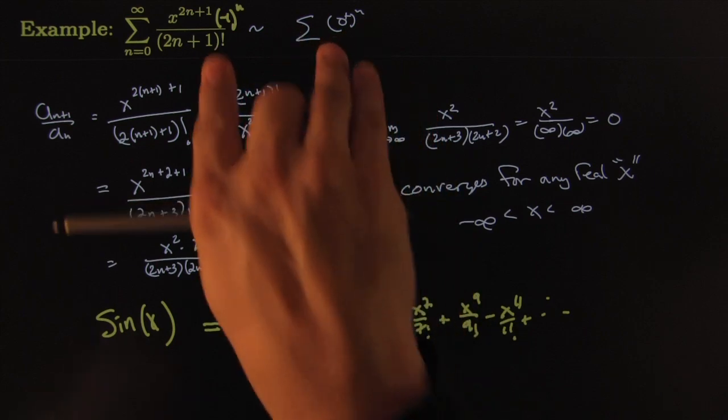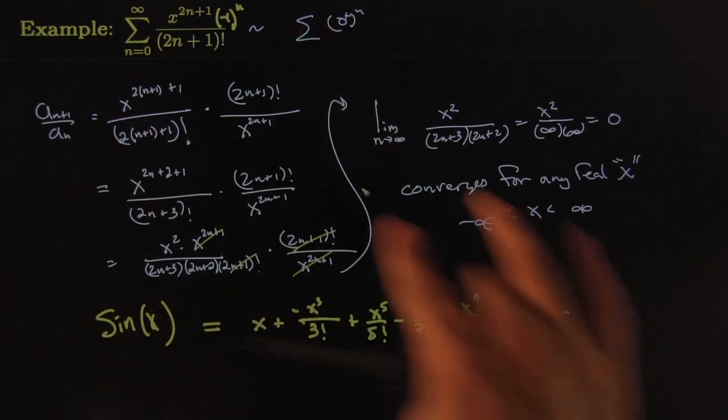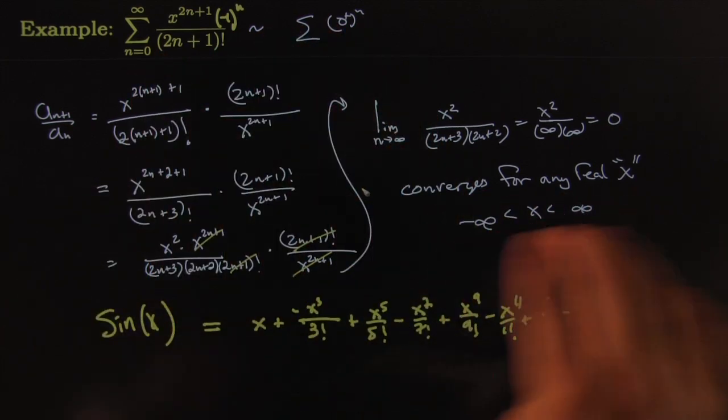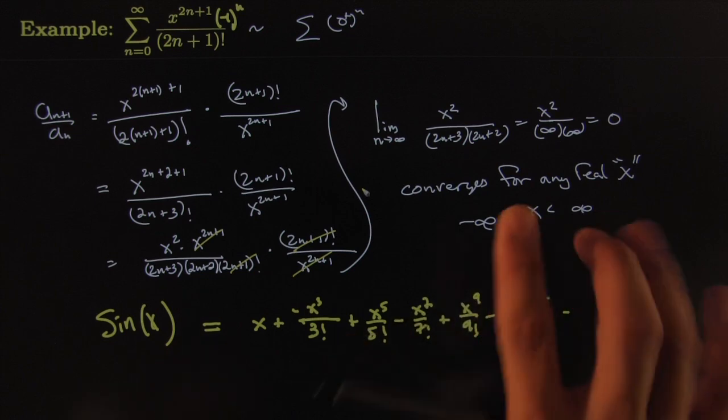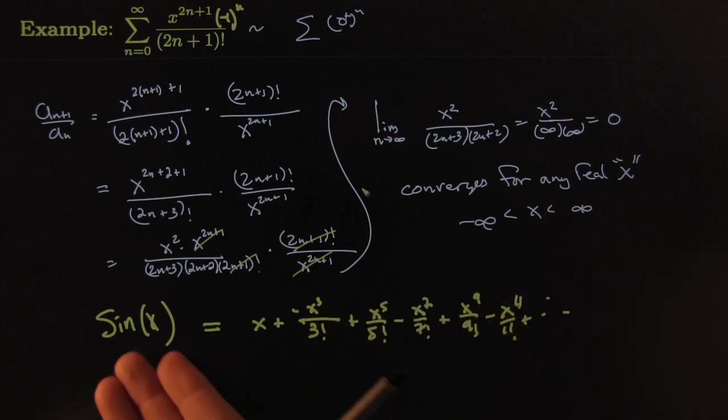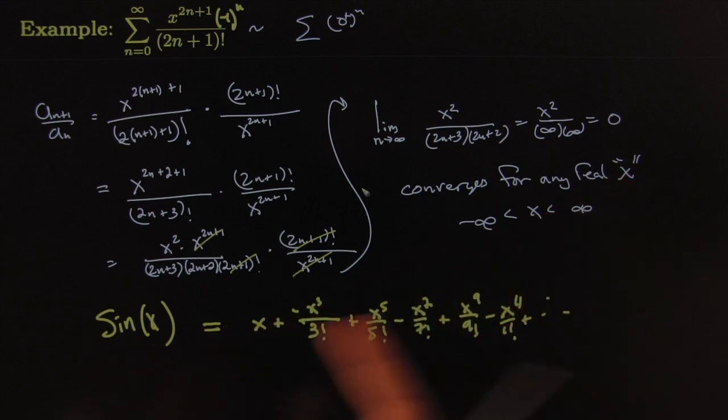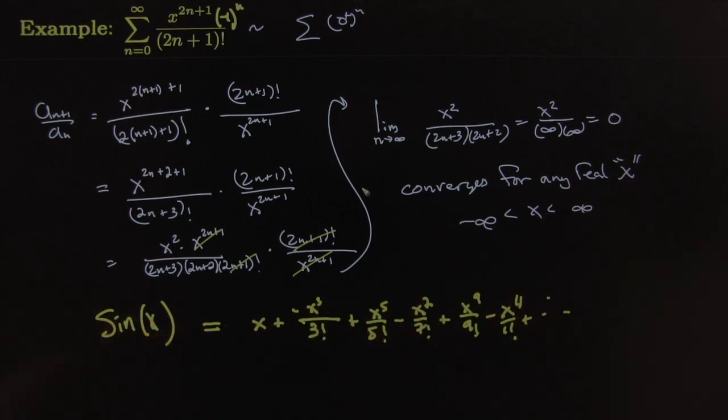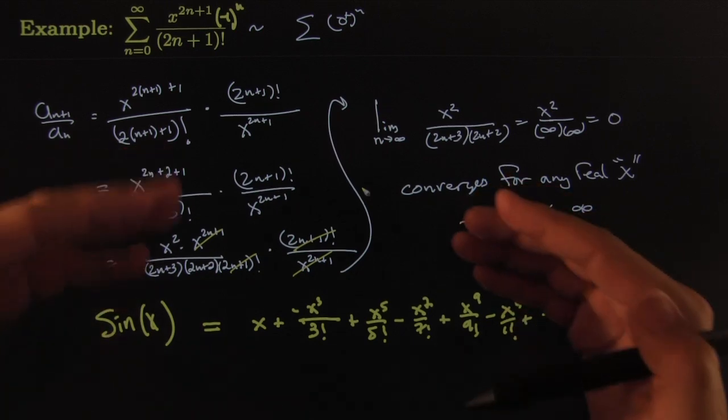Oh, and specifically what we're doing is we're answering these type of questions: for which x's does it converge? In this case it converges for all x's, which translates into for which x's is this bridge valid? Well, it's valid for all possible real number x's. Amazing.